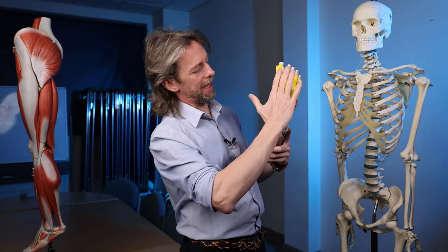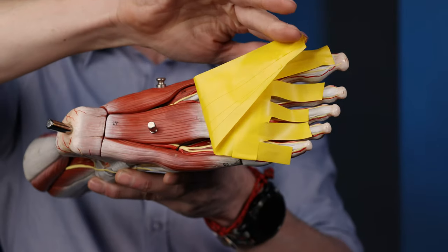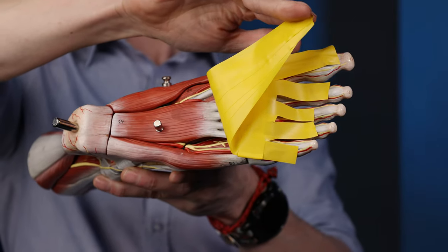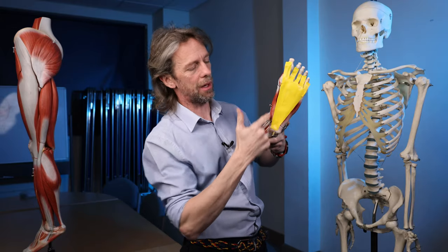So it does wrap around a bit more than this demonstrates here, but this is the thickest central part here. And one of its functions then is—well the sole of the foot goes down against the ground and we have nerves and blood vessels in here—so one of the functions of the plantar aponeurosis is protection to protect those deeper structures of the foot.